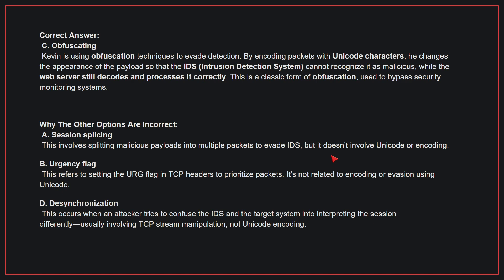Why the other options are incorrect? A: Session splicing — this involves splitting malicious payloads into multiple packets to evade IDS, but it doesn't involve Unicode or encoding. B: Urgency flag — this refers to setting the URG flag in TCP headers to prioritize packets; it's not related to encoding or evasion using Unicode. D: Desynchronization — this occurs when an attacker tries to confuse the IDS and the target system into interpreting the session differently, usually involving TCP stream manipulation, not Unicode encoding. Therefore, the correct answer is C.